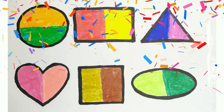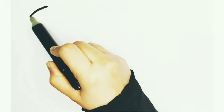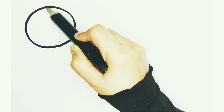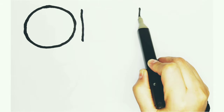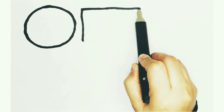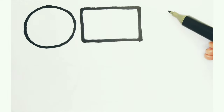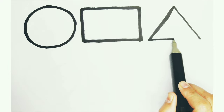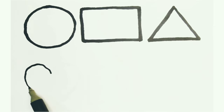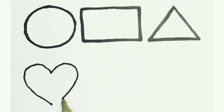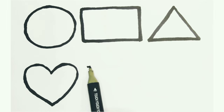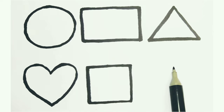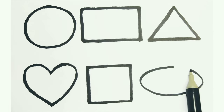2D Shapes: Circle, Rectangle, Triangle, Heart, Square, Oval.